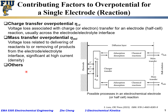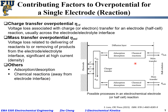Other than charge transfer and mass transfer losses, there may be additional loss mechanisms. As we see in this schematic, there may be adsorption or desorption for oxidized species, and similarly adsorption or desorption for reduced species, each with associated voltage loss or overpotential. Also, between adsorbed or desorbed species near the electrode and far away, there may be additional chemical reactions away from the electrode-electrolyte interface, which may also contribute additional voltage loss.